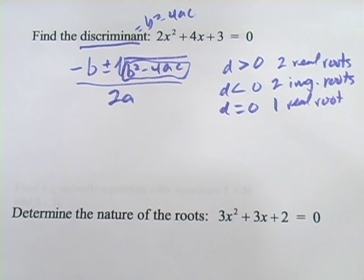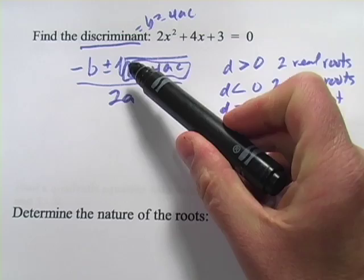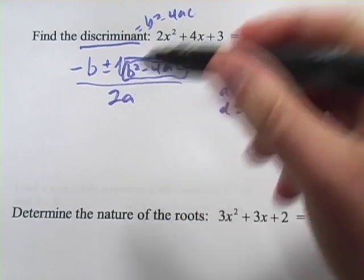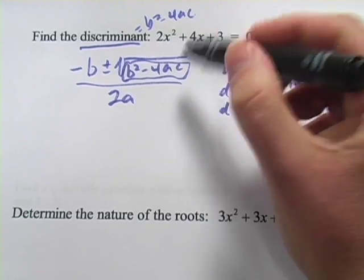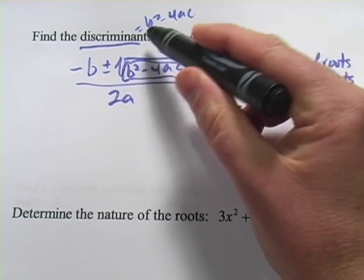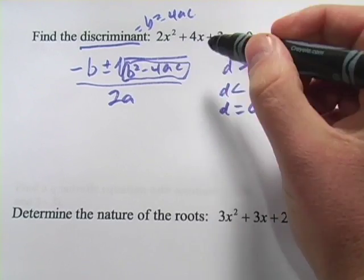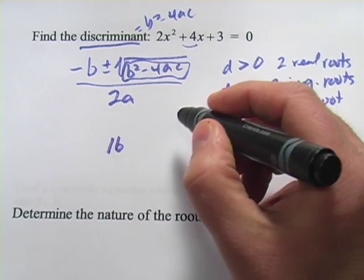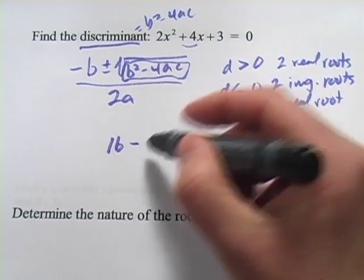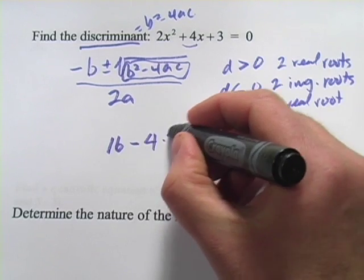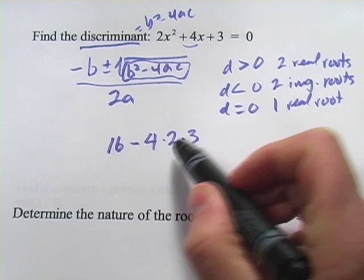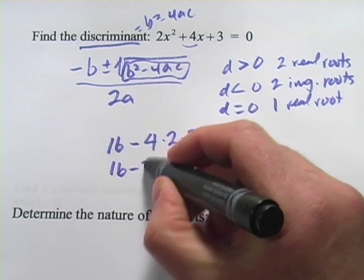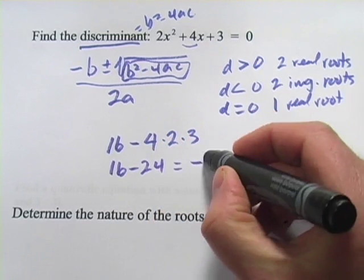All right, let's put this to work here. In this first problem, it says find the discriminant. In a lot of ways, this is quite a bit easier than doing the quadratic equation because we only have to do part of it. We need to find b squared minus 4ac. Well, b here is 4, so that's 16 is b squared. And then minus 4 times a times c. So 4 times 2 is 8 times 3 is 24. This is 16 minus 24, which equals negative 8.